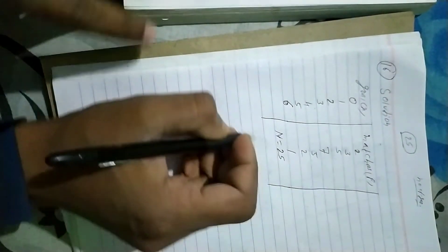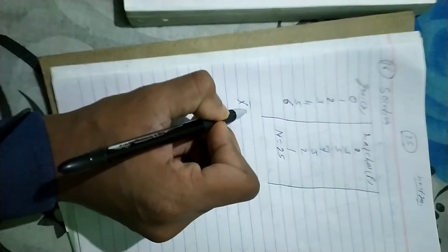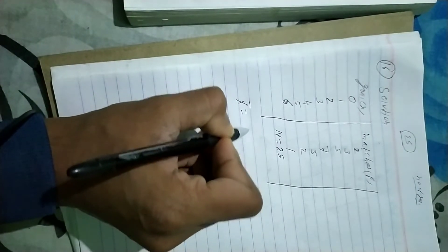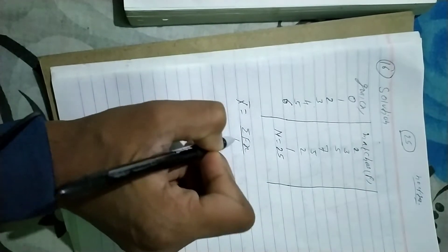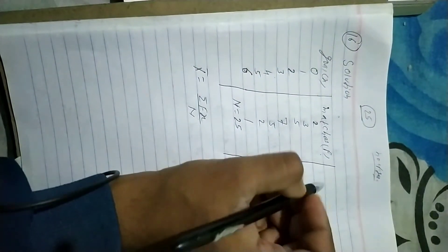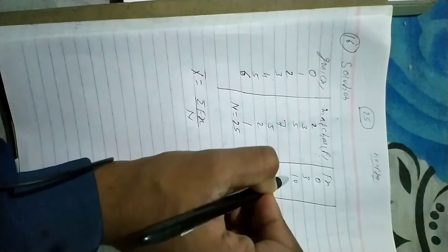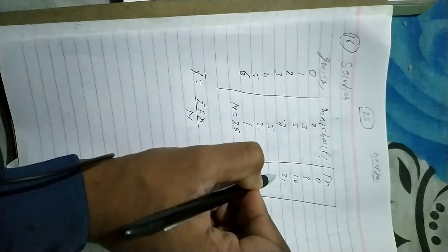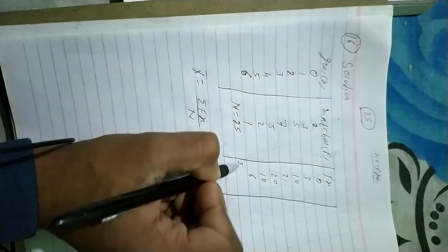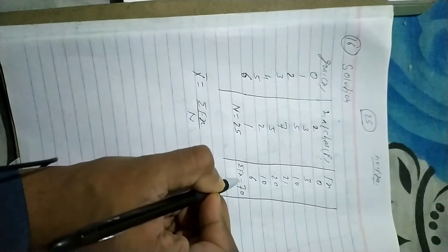To find the mean, the formula for discrete series is summation fx divided by n. So we calculate fx: 0 times 3 is 0, 5 times 2 is 10, 5 times 4 is 20, 5 times 6 is 30. The summation of fx gives us 70.